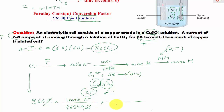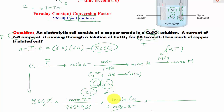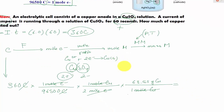Since this is moles of electrons, the bottom part must be 2 moles of electrons. The top part must be 1 mole of copper. Then moles of electrons cancel out, giving us moles of copper. To convert from moles of copper to mass of copper, we use the molar mass of copper from the periodic table, which is 63.55 g/mol. The moles of copper cancel out, leaving us with 63.55 grams of copper on top.